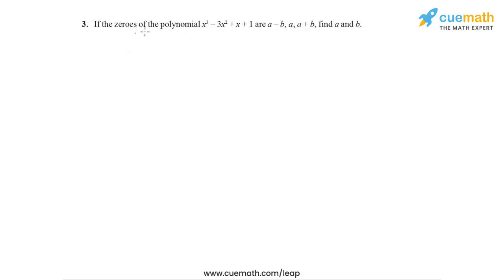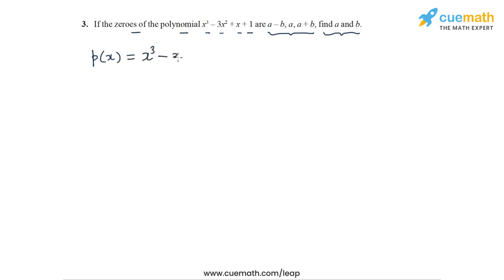Question 3 of this exercise: if the zeros of the polynomial x³ - 3x² + x + 1 are a-b, a, and a+b, we have to find the values of a and b. So the polynomial p(x) is x³ - 3x² + x + 1, and the zeros are a-b, a, and a+b.